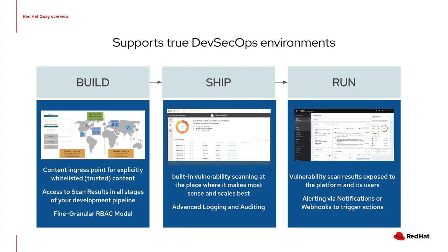Red Hat Quay is built to support true DevSecOps environments. It helps you to control how content is flowing into and then used inside your environment. Quay can manage a centralized content ingestion point for explicitly whitelisted and trusted content. This allows you to explicitly define which content from Red Hat, other software vendors, your suppliers, or the open-source community can be used within your environment. The fine-grained access control model allows you to configure both Quay and OpenShift in a way that reflects your organizational setup and workflows.